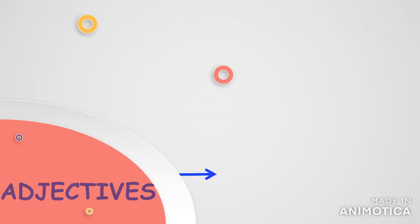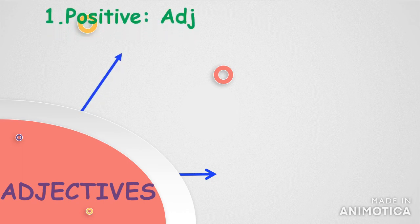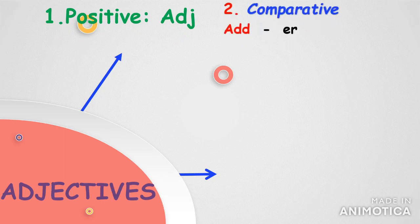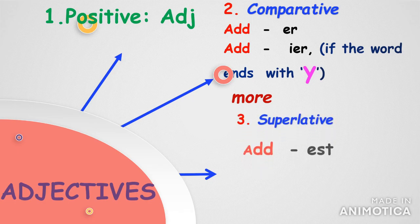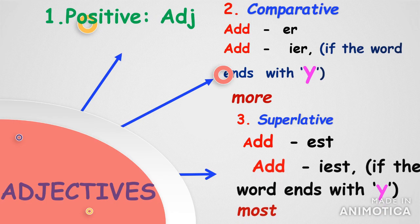So we have learned that the adjective in its base form is in positive degree. The second degree is comparative, where we add 'er', and if it ends in 'y' we add 'i' plus 'er', and if the adjective is long we add 'more' before it. The third degree is superlative degree, where we add 'est', and if the adjective ends with 'y' we add 'i' plus 'est', and if the adjective is long we add 'most' before it.